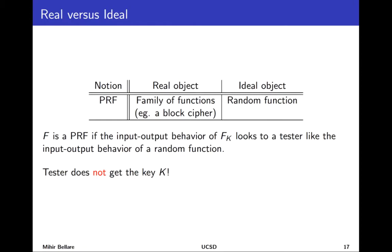The intuitive idea of a pseudorandom function is simple. Consider the input-output behavior of f when you fix the key to a particular choice k, chosen at random and hidden from you as the tester. All you get to do is give inputs and get outputs. The property we're interested in is that those inputs and outputs look much the same as what you'd get from a random function — whether you're playing the random game or the game of giving inputs to f under k and getting outputs, you would not be able to tell. A key component is that the tester does not know what the key is.